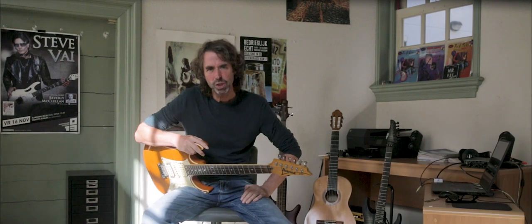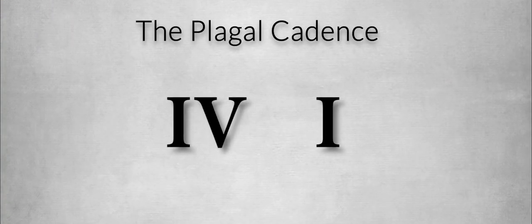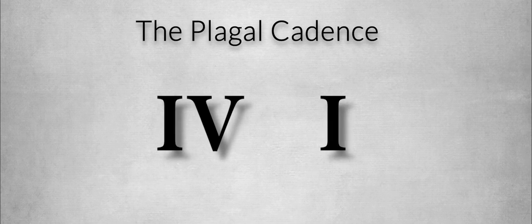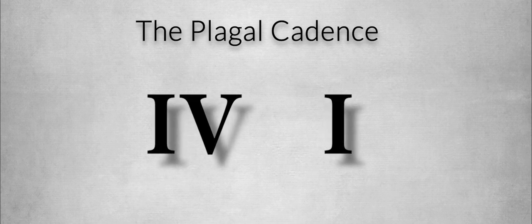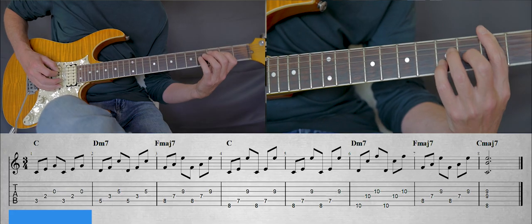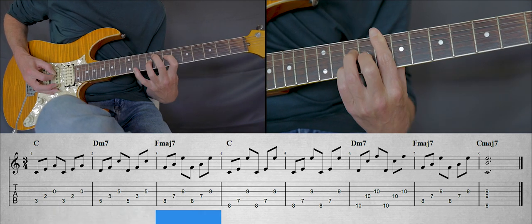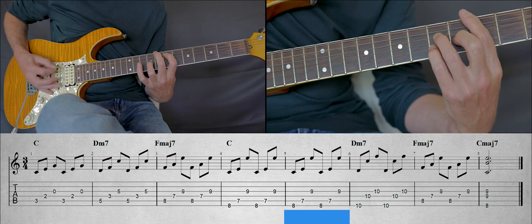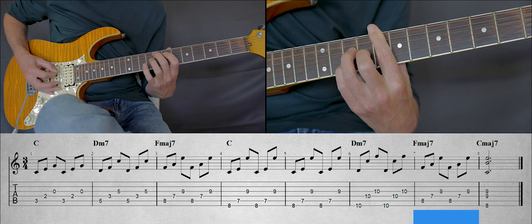The plagal cadence is also a finished cadence, but a little more subtle than the perfect cadence. Here the tonic is preceded by the subdominant instead of the dominant chord, so you would play a 4-1 progression instead of a 5-1 progression. Listen to the example in a major key with the plagal cadence. Again, it is a finished cadence, but in a gentle way — much more gentle than the perfect cadence. Of course, we can also play a plagal cadence in a minor key.